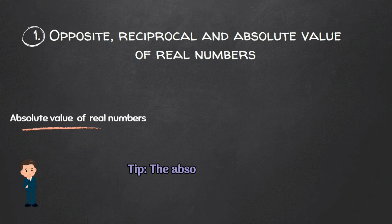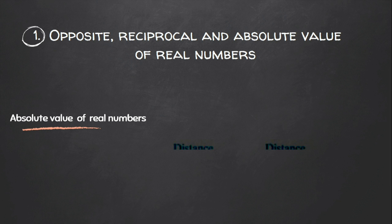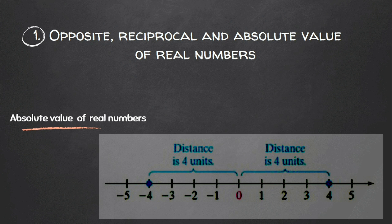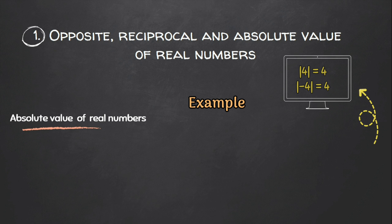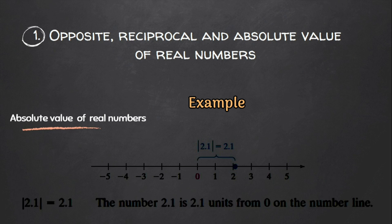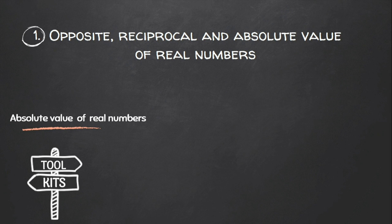The absolute value of a real number means how far a number is from zero. On the real line, four is four points away from zero, and minus four is also four points away from zero. That means the absolute value of four and minus four is both four. This is written symbolically and read as: the absolute value of a given number is that number.